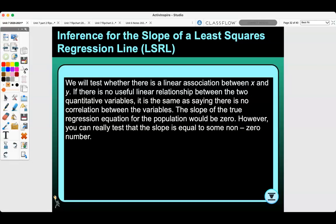Today we will look at the inference for the slope of a least squares regression line. We will test whether there is a linear association between x and y. If there is no useful linear relationship between the two quantitative variables, it is the same as saying there is no correlation between the variables. The slope of the true regression equation for the population would be zero.